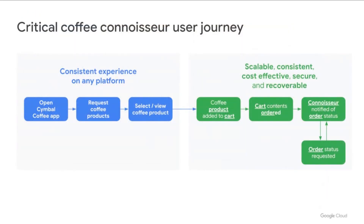As we were developing the application, we wanted to keep our users at the front of our minds. This is where mapping the user journey helped. We decided the user journey would have two parts. In the first part, coffee connoisseurs would open the Symbol Coffee app, view, and select their product — a consistent experience on any platform, be that mobile or in-store kiosks. The second part involved adding a coffee to the cart, making the order, and sending a notification when it was available to collect. This would all be handled by the back-end, which would need to scale as more orders were made.